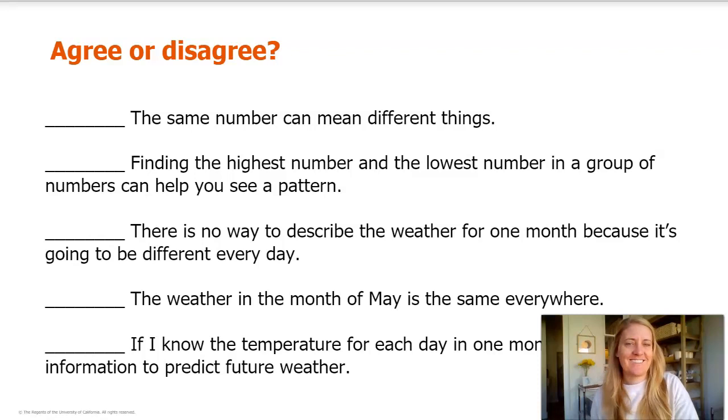Here's the first sentence: The same number can mean different things. Second sentence: Finding the highest number and the lowest number in a group of numbers can help you see a pattern.